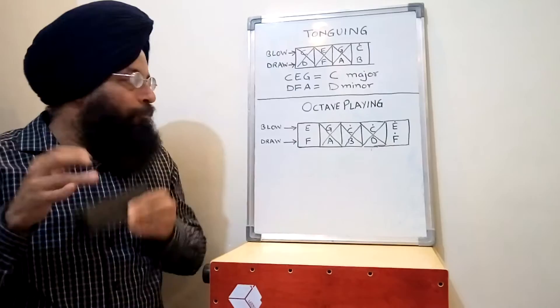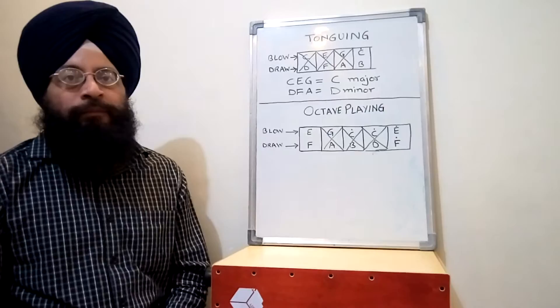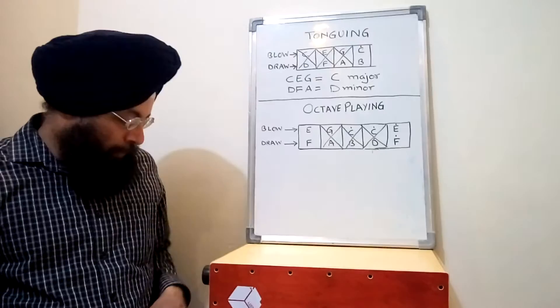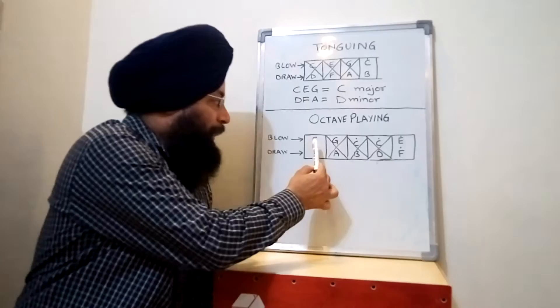So just by covering the in-between holes between the two similar notes with the help of your tongue, you can produce this beautiful effect of octave playing. Now you have to be careful while playing octave that the tuning of the similar notes must be perfect.